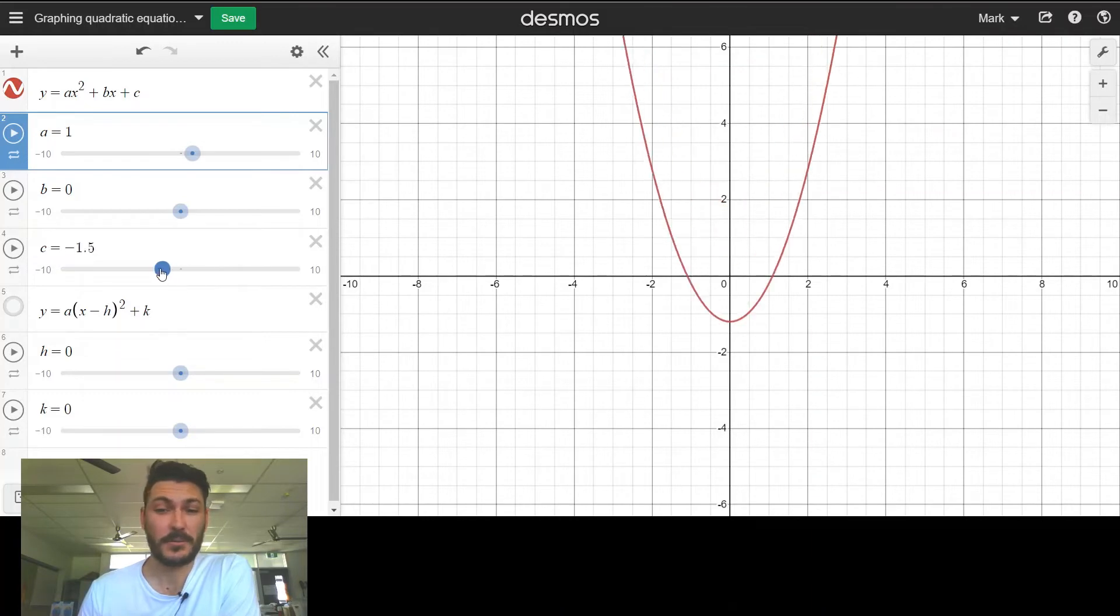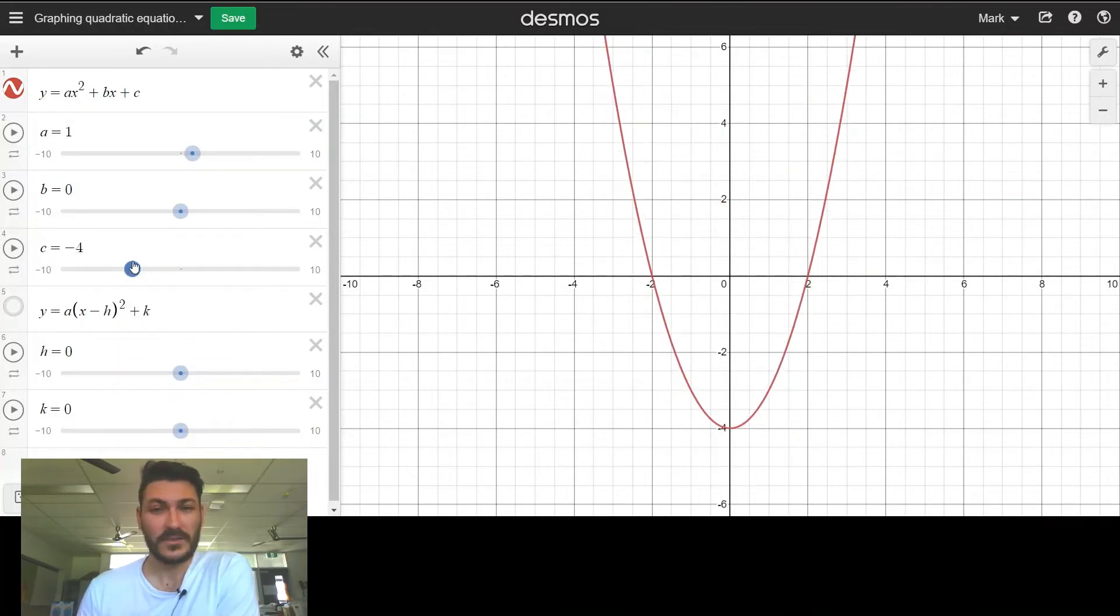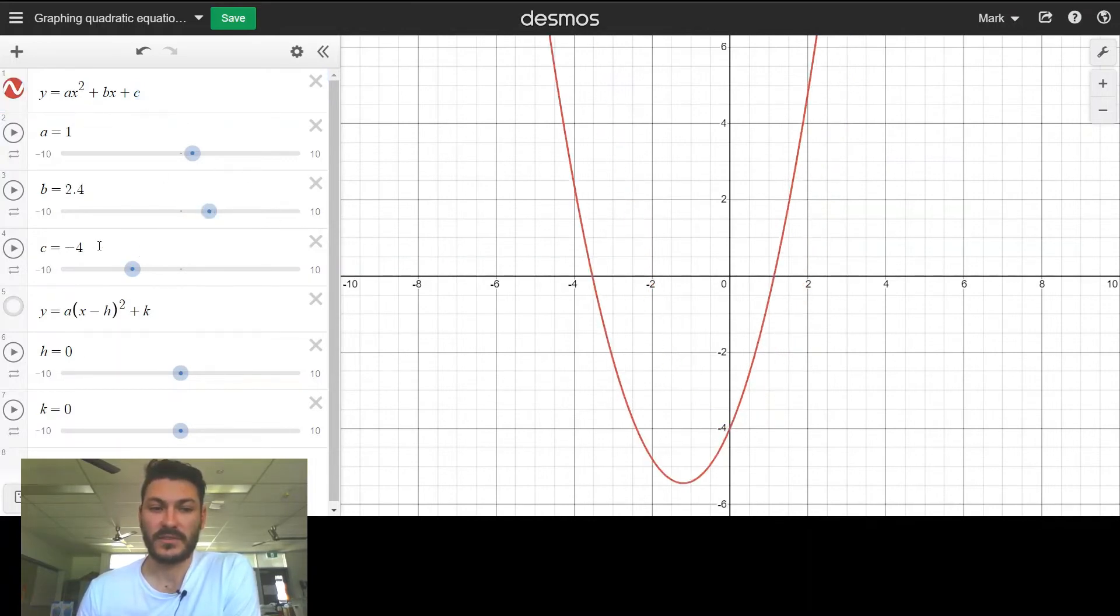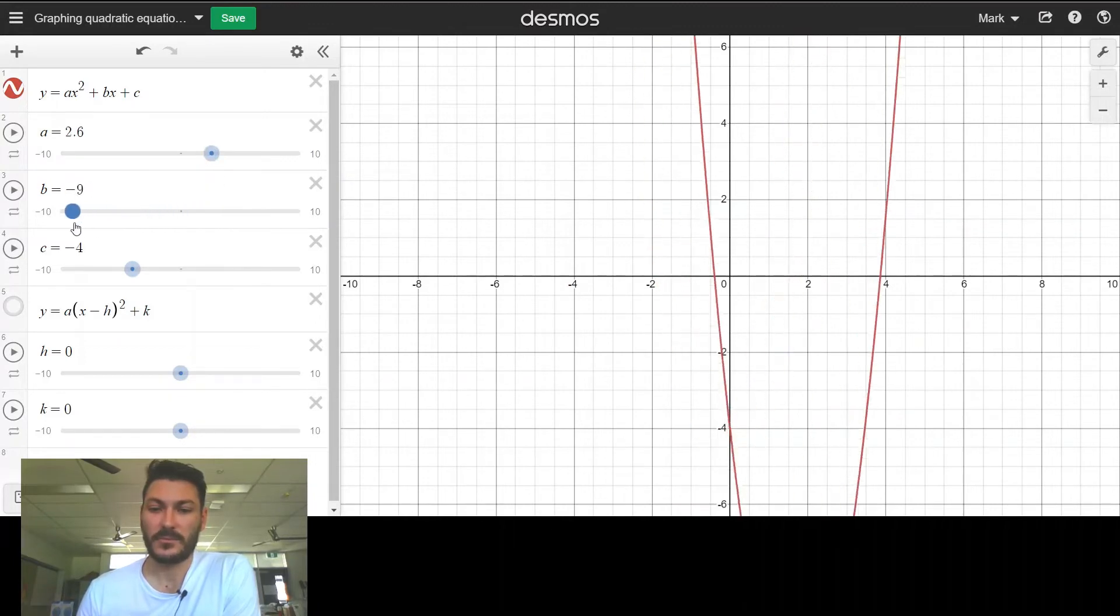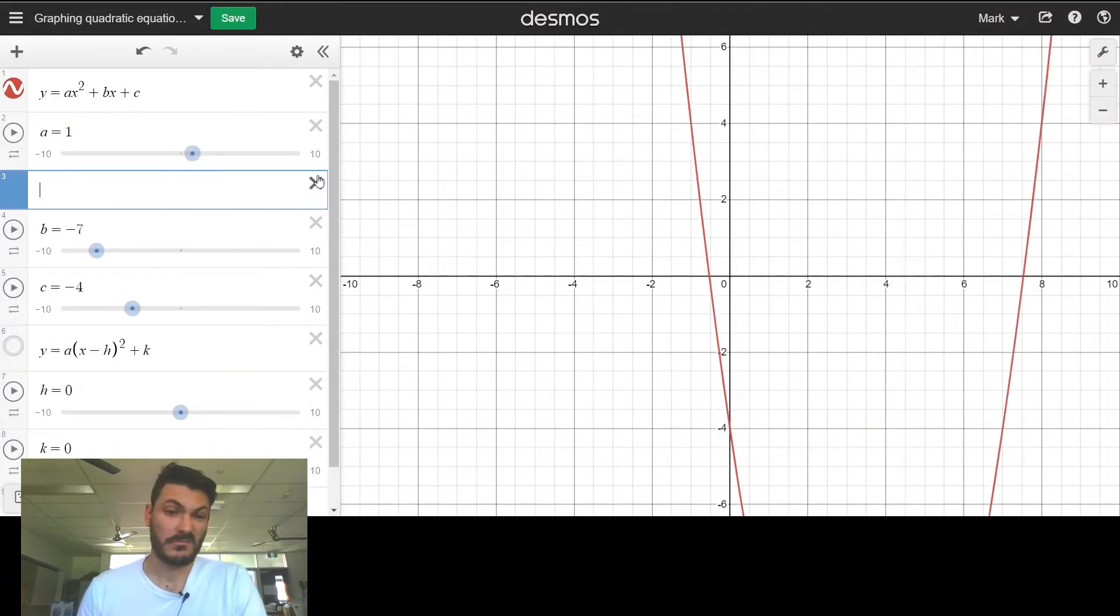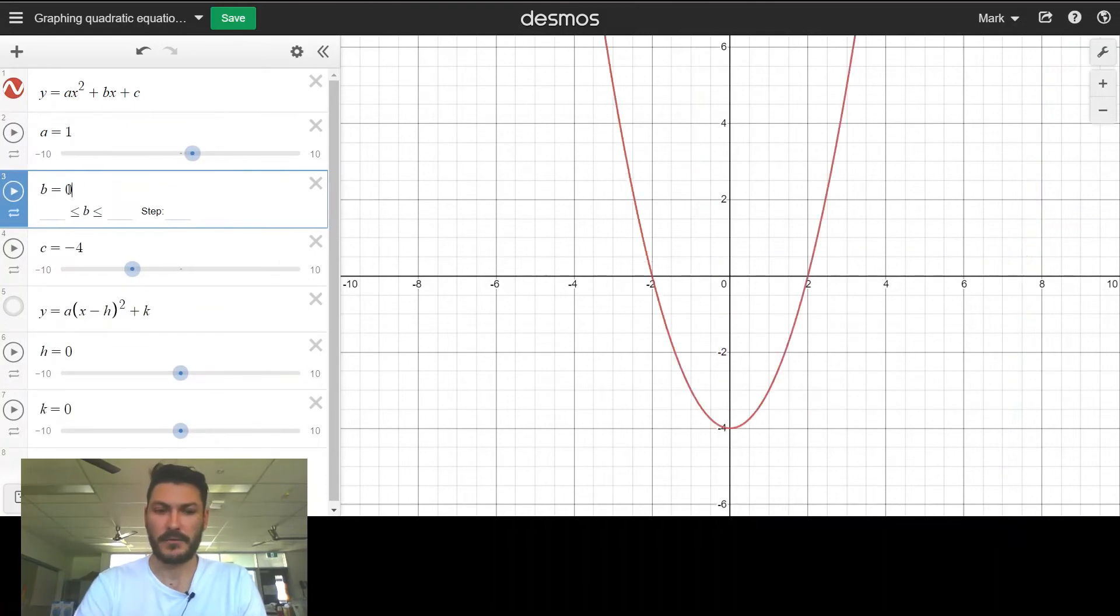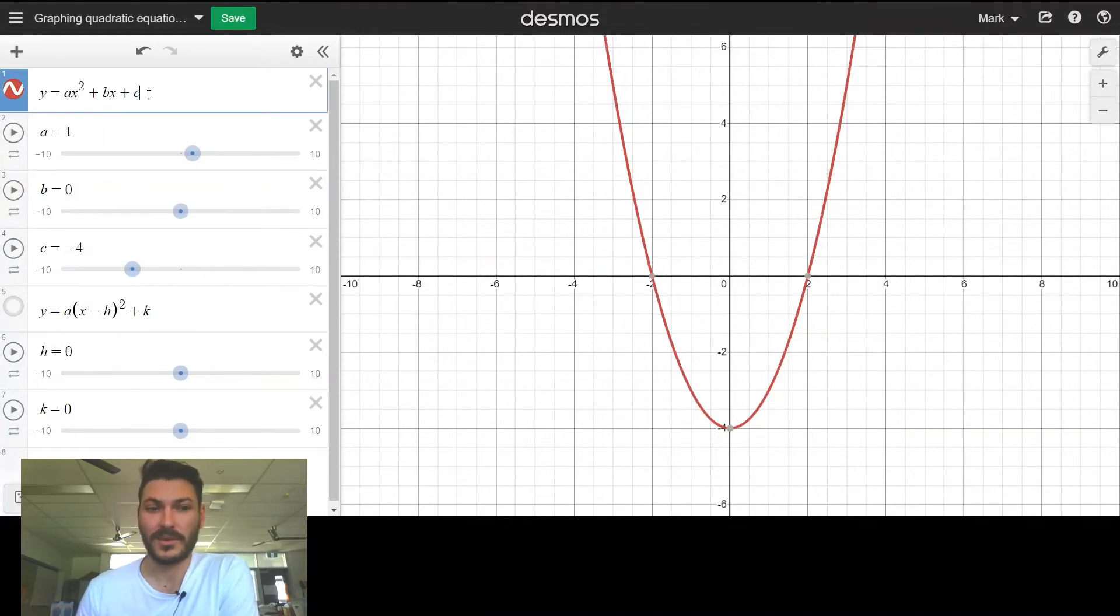C is just going to move my parabola up and down. As I mentioned at the start, there are positives and negatives to both forms of the quadratic equations. The positive here with this form is that this c term just tells you instantly what the y-intercept is. Even if b changes, this c value—say negative 4—as I move b, the y-intercept is always going to be negative 4 no matter what b and no matter what a are. The rest of the parabola moves around it.